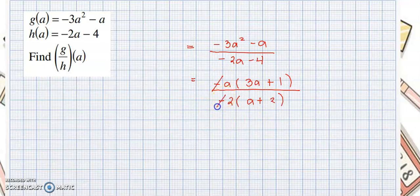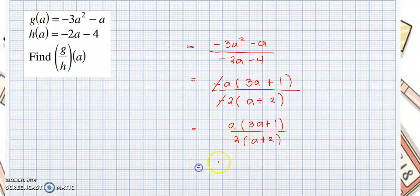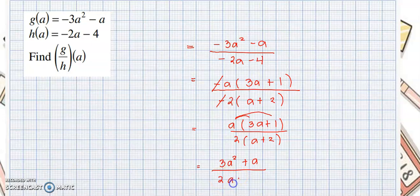So we can cancel out the negative sign. What remained would be a multiplied by 3a plus 1 over 2 multiplied by a plus 2. If you distribute this again for the simplest form, this can be 3a squared plus a over 2a plus 4. As you can see, we just canceled out the negative sign.